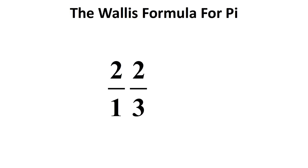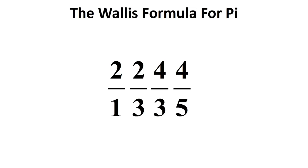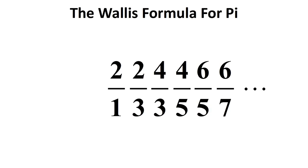Start with the pair of fractions 2 over 1 times 2 over 3. Now increase every single number in this pair by 2. This becomes 4 over 3 times 4 over 5. Once again increase every single number in this pair of fractions by 2. We get 6 over 5 times 6 over 7. If you repeat this process infinitely many times you'll end up with an infinite product of fractions which are exactly equal to pi divided by 2.